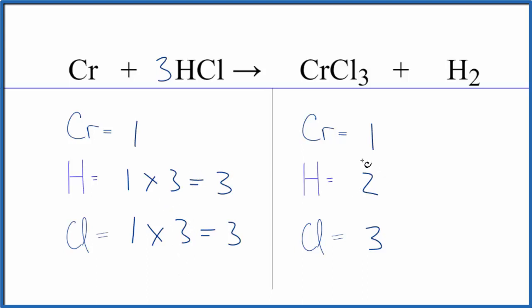So we have a problem now because we have a three here and a two here. Everything else is balanced. The only way to deal with that is to double this number to get an even number. So let's make this a six.